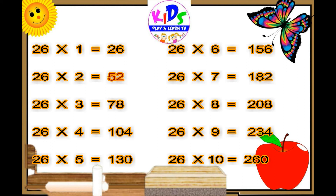26 6s are 156, 26 7s are 182, 26 8s are 208, 26 9s are 234, 26 10s are 260.